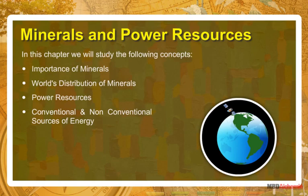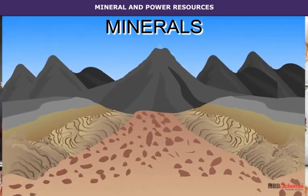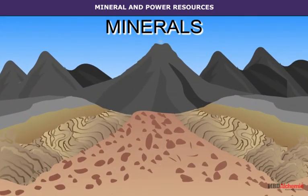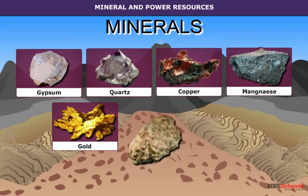In this chapter we will study the following concepts: importance of minerals, world distribution of minerals, power resources, conventional and non-conventional sources of energy, and mineral and power resources. Minerals are naturally occurring substances that have a definite chemical composition. Their chemical composition may consist of one or more elements. Minerals are not equally distributed on the earth's surface; they are concentrated in particular areas. Some common examples of minerals are gypsum, quartz, copper, manganese, gold, bauxite, and talc.